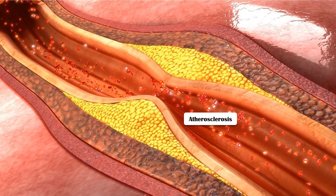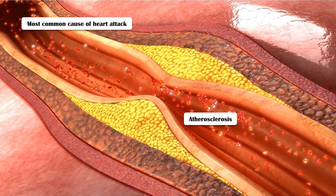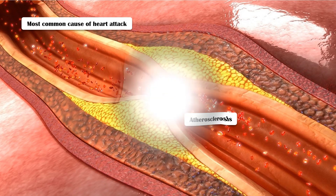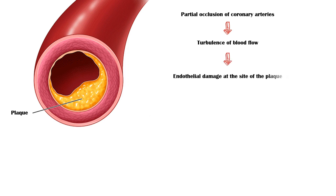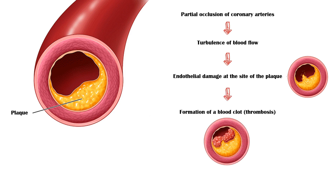Atherosclerosis, or formation of lipid plaques in the coronary arteries or their branches, is by far the most common cause of heart attack. When an artery is partially occluded by an atherosclerotic plaque, it causes turbulence in the blood flow through the affected artery, causing damage to the endothelial lining of the artery at the site of the plaque. This will lead to formation of a blood clot at the affected site, causing complete obstruction to the blood flow and compromising tissue perfusion.